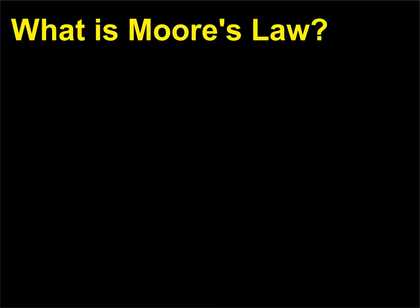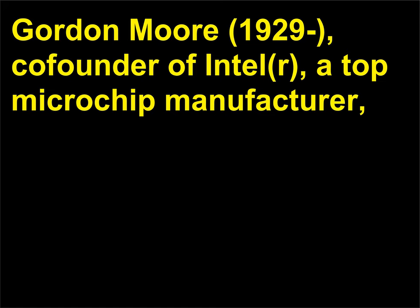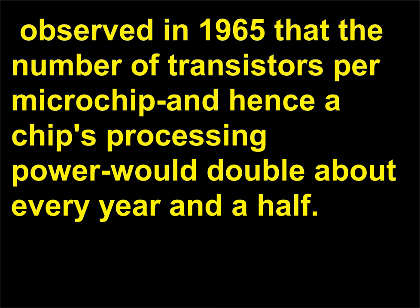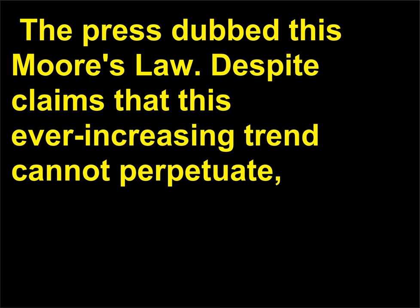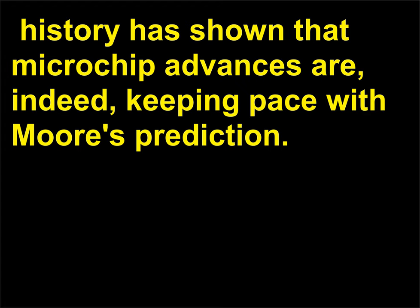What is Moore's law? Gordon Moore, 1929, co-founder of Intel, a top microchip manufacturer, observed in 1965 that the number of transistors per microchip — and hence a chip's processing power — would double about every year and a half. The press dubbed this Moore's law. Despite claims that this ever-increasing trend cannot perpetuate, history has shown that microchip advances are, indeed, keeping pace with Moore's prediction.